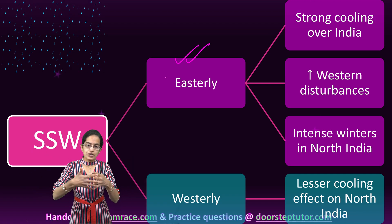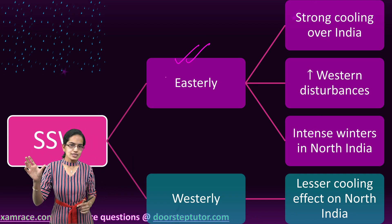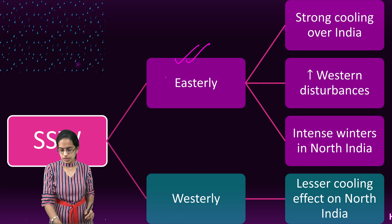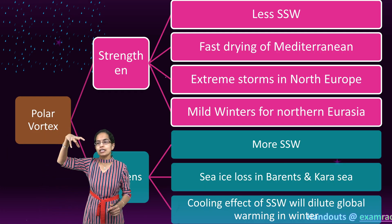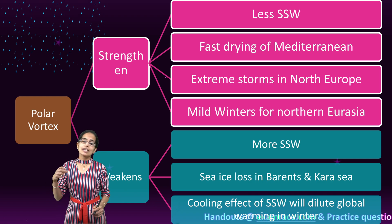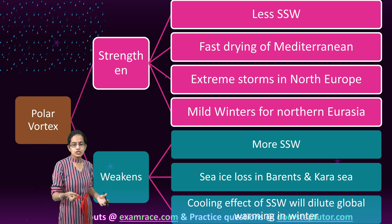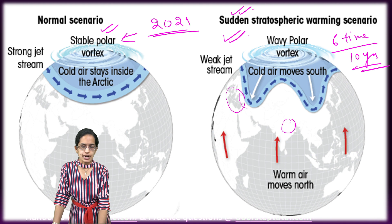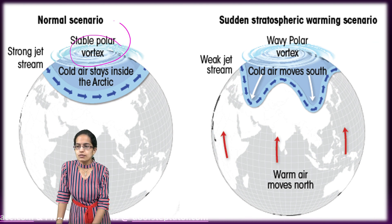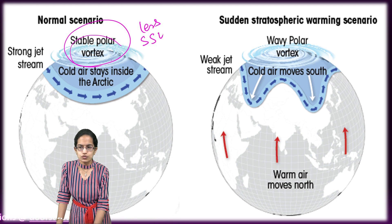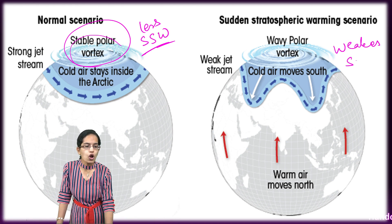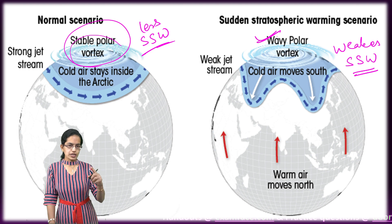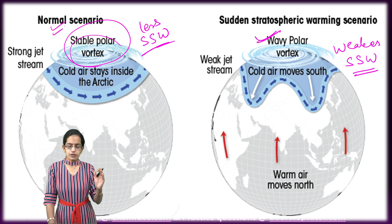That relationship helped establish that sudden stratospheric warming is responsible for a significantly higher amount of rainfall witnessed in India during that time. The polar vortex can either strengthen or weaken. When it weakens — as seen during sudden stratospheric warming — it becomes wavy and unstable. The polar vortex is stable and strong when there is less stratospheric warming, and weakens when there is a strong SSW. In a normal scenario, it remains stable and strong, leading to faster drying of Mediterranean regions, extreme storms in the North Eurasian region, and mild winters there.